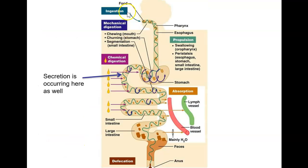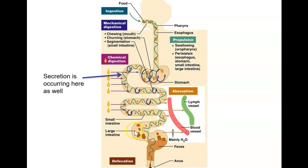A diagram shows these different parts: ingestion occurs in the mouth; propulsion — including swallowing and peristalsis — moves food down through the pharynx and esophagus; mechanical digestion involves chewing and the churning of the stomach; segmentation and chemical digestion occur in the small intestines; absorption takes place as nutrients are absorbed into blood and lymph vessels; and finally, elimination of waste or defecation occurs at the end. That's a quick overview of the digestive system — the organs involved, the tissues, how they're arranged, and overall function.